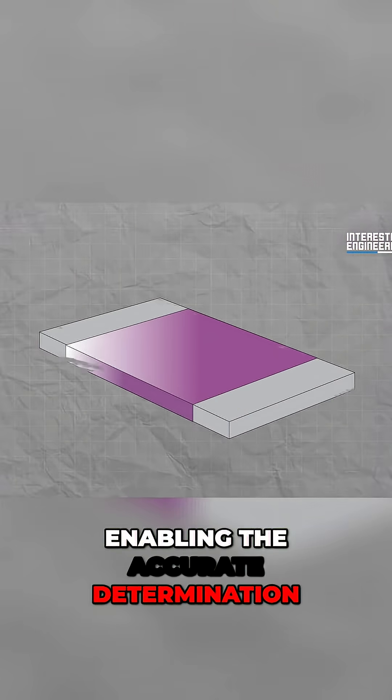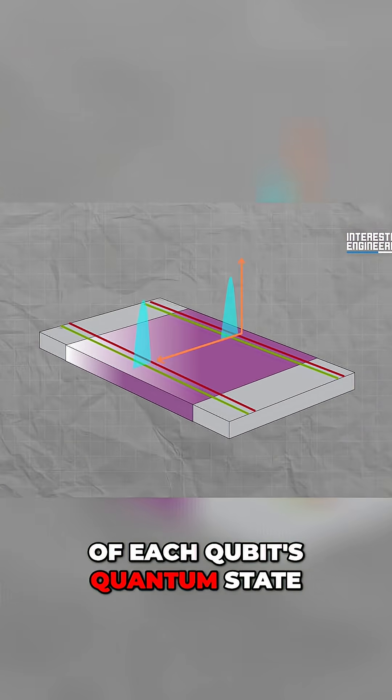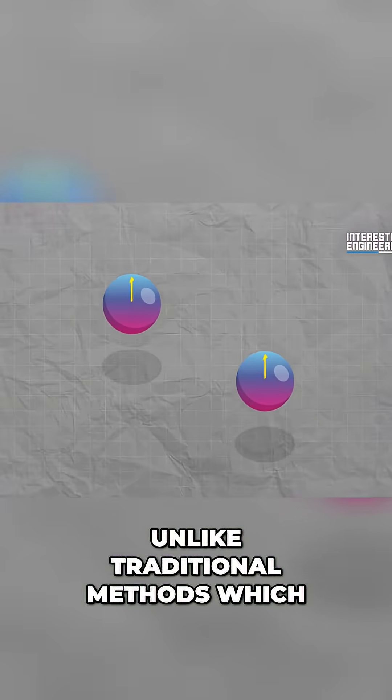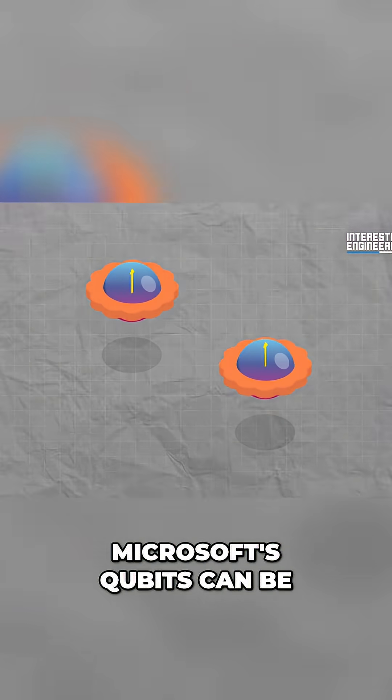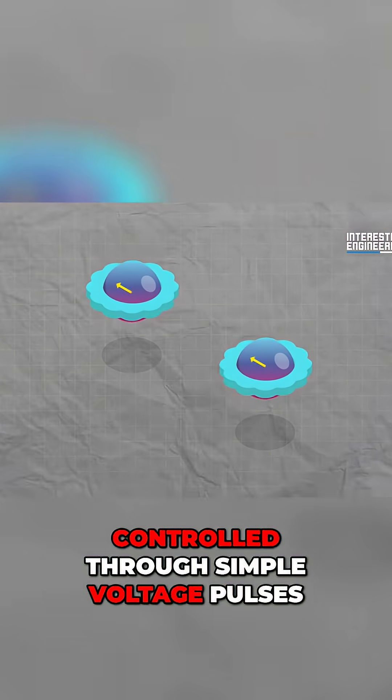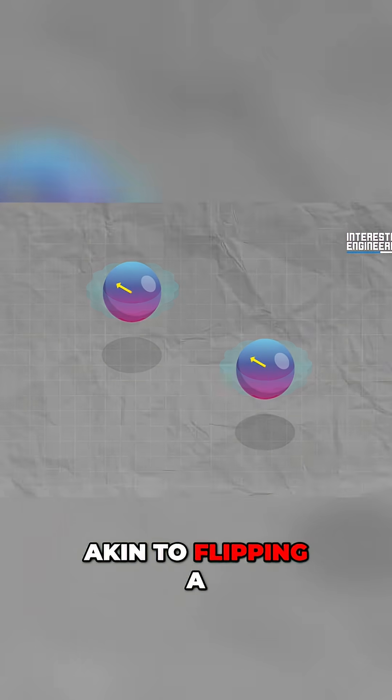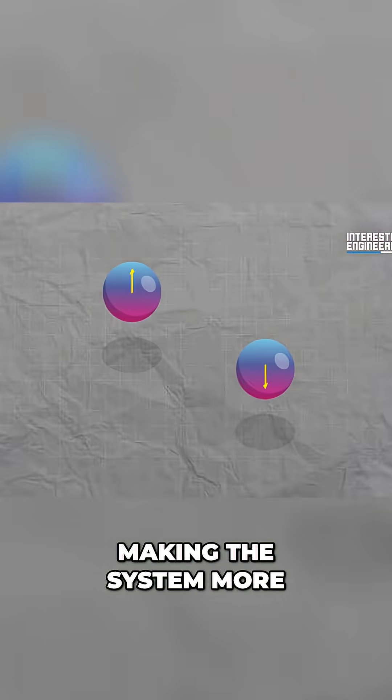This enables the accurate determination of each qubit's quantum state. Unlike traditional methods which require complex procedures, Microsoft's qubits can be controlled through simple voltage pulses, akin to flipping a light switch, making the system more practical and easier to scale.